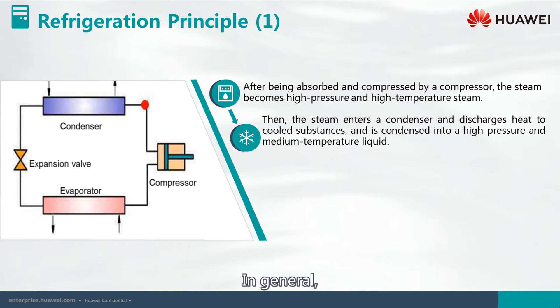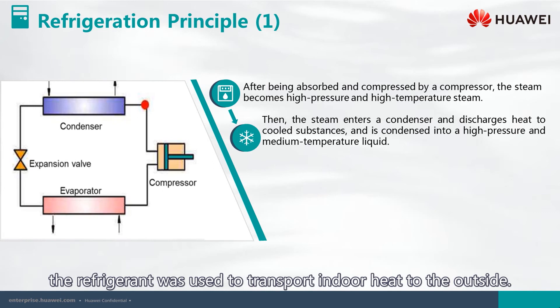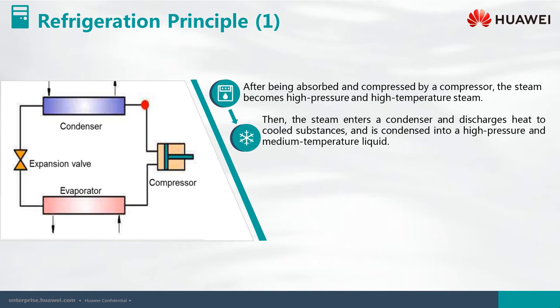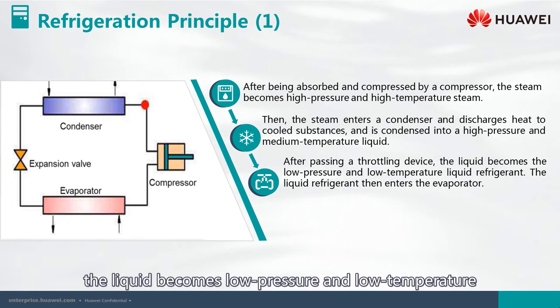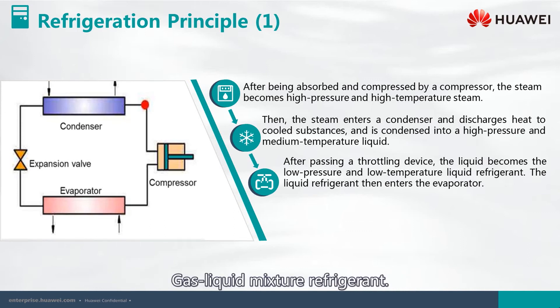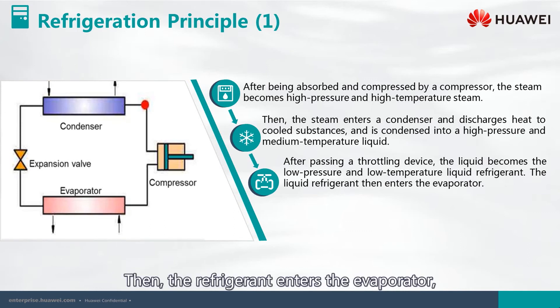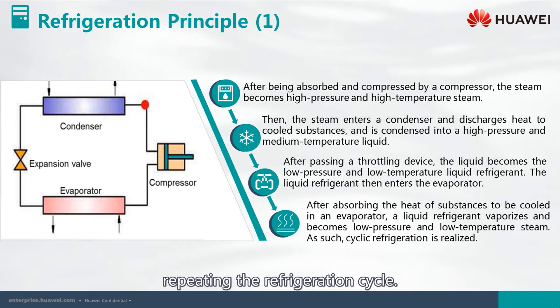In general, the refrigerant is used to transport indoor heat to the outside. After passing through a throttling device, the liquid becomes a low pressure and low temperature gas-liquid mixture refrigerant. Then the refrigerant enters the evaporator, repeating the refrigeration cycle.